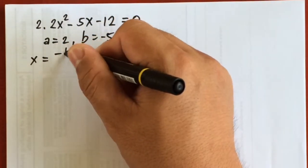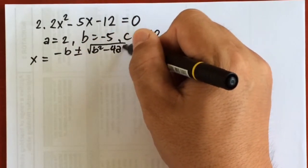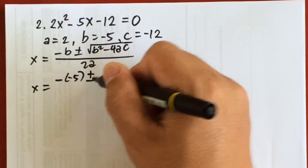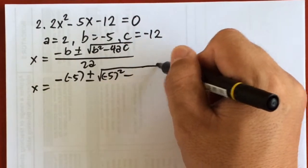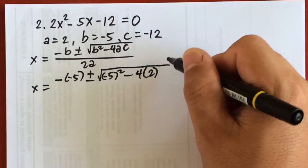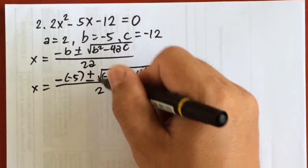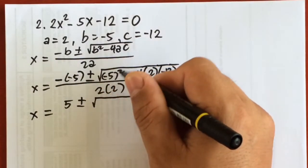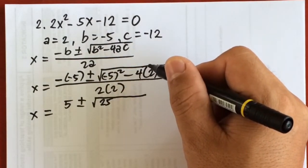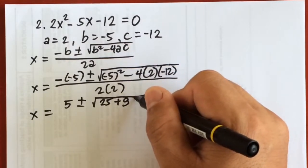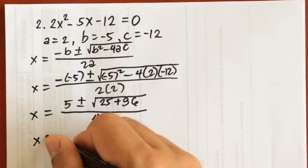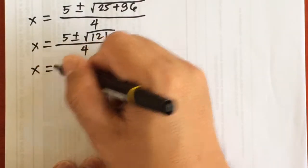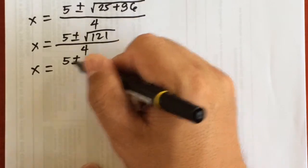Using the quadratic formula, x equals negative b plus and minus the square root of b squared minus 4ac over 2a. Substituting, we get 5 plus and minus the square root of 25 plus 96, over 4. That gives us the square root of 121, which is 11. So x equals 5 plus and minus 11 over 4.